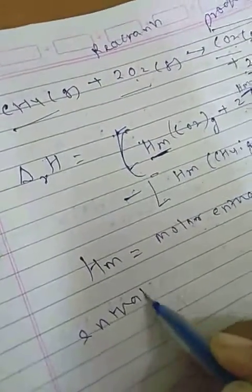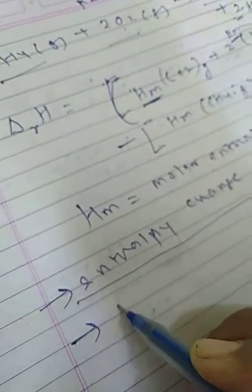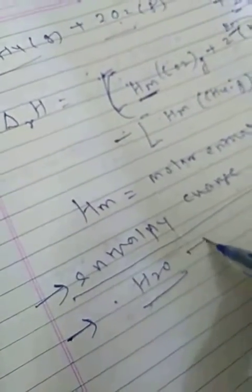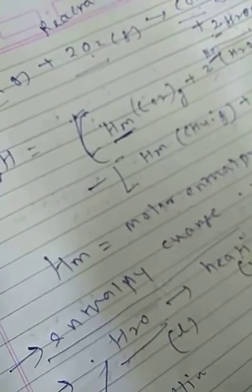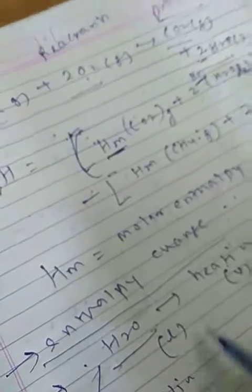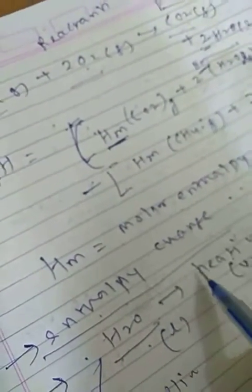Enthalpy change is a very useful quantity. First point: knowledge of this quantity is required when one needs to plan the heating or cooling — for example, if we are heating water, liquid converts into vapor, or by cooling it converts into ice. It is also required to maintain an industrial chemical reaction at constant temperature and to calculate the temperature dependence of equilibrium constant.